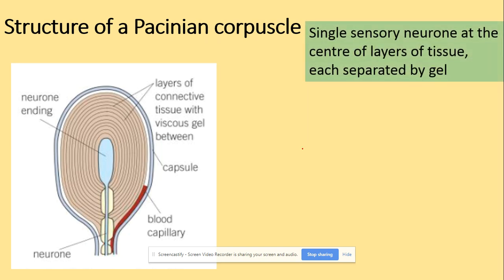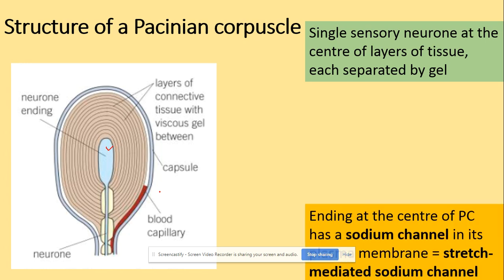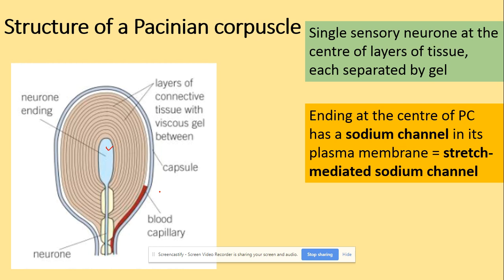It's a single sensory neuron at the center of the layers of tissues which are separated by gel. The ending at the center of the Pacinian Corpuscle has sodium ion channels — remember to include 'ion' — in its plasma membrane, and we call it a stretch-mediated sodium ion channel.